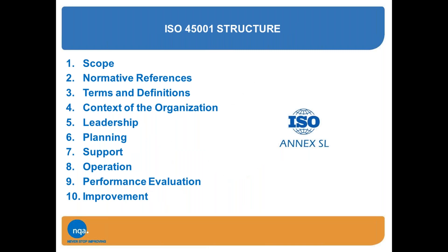As you may well be aware, ISO 45001 is based on the Annex SL structure, which is the high-level structure introduced by ISO and recently applied to other standards such as ISO 9001:2015 for quality management and ISO 14001:2015 for environmental management. The structure is broken down into 10 chapters or elements within the management system. The first three elements — scope, normative references, and terms and definitions — refer to the ISO standard itself, describing what it's trying to achieve with its implementation.